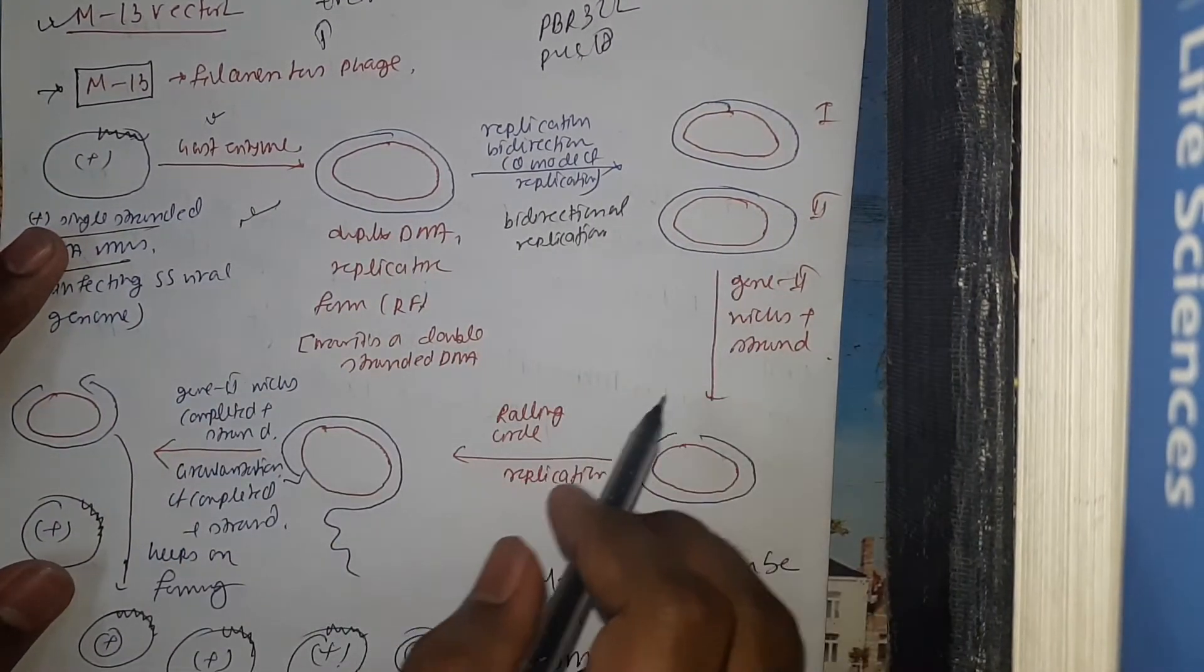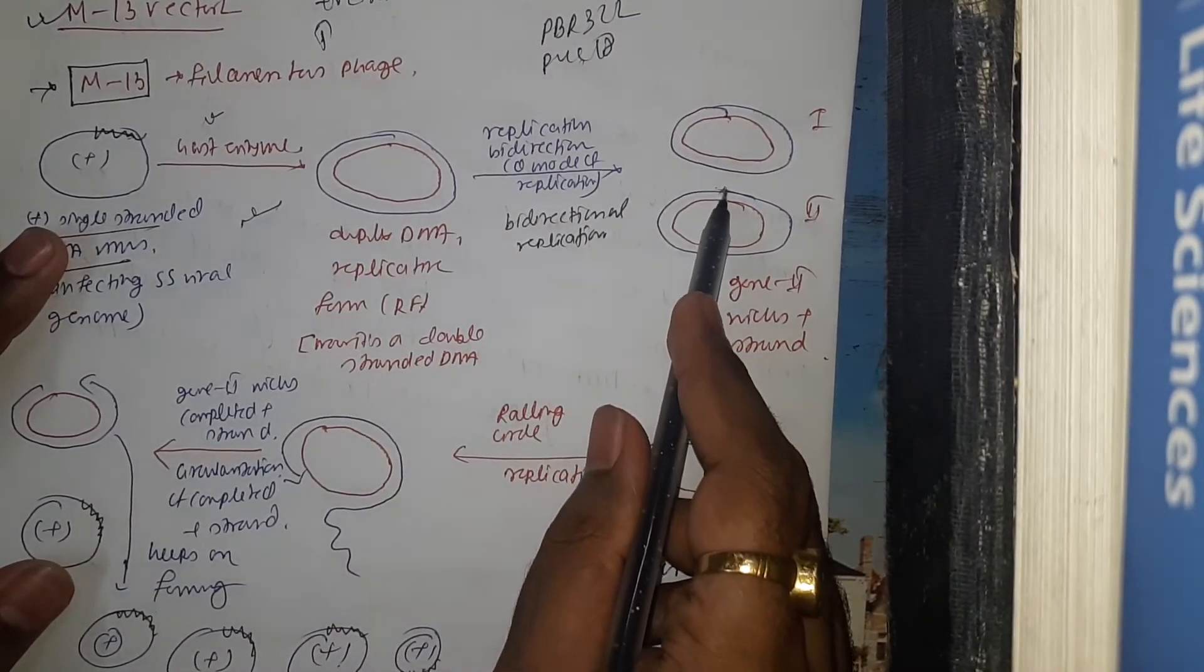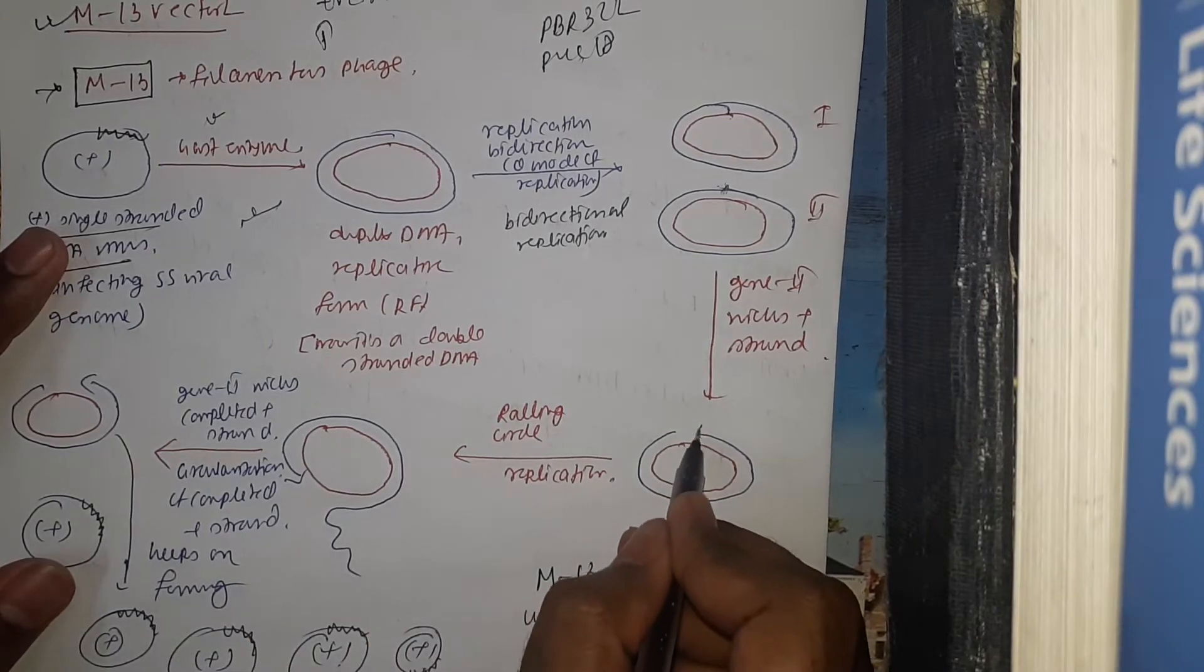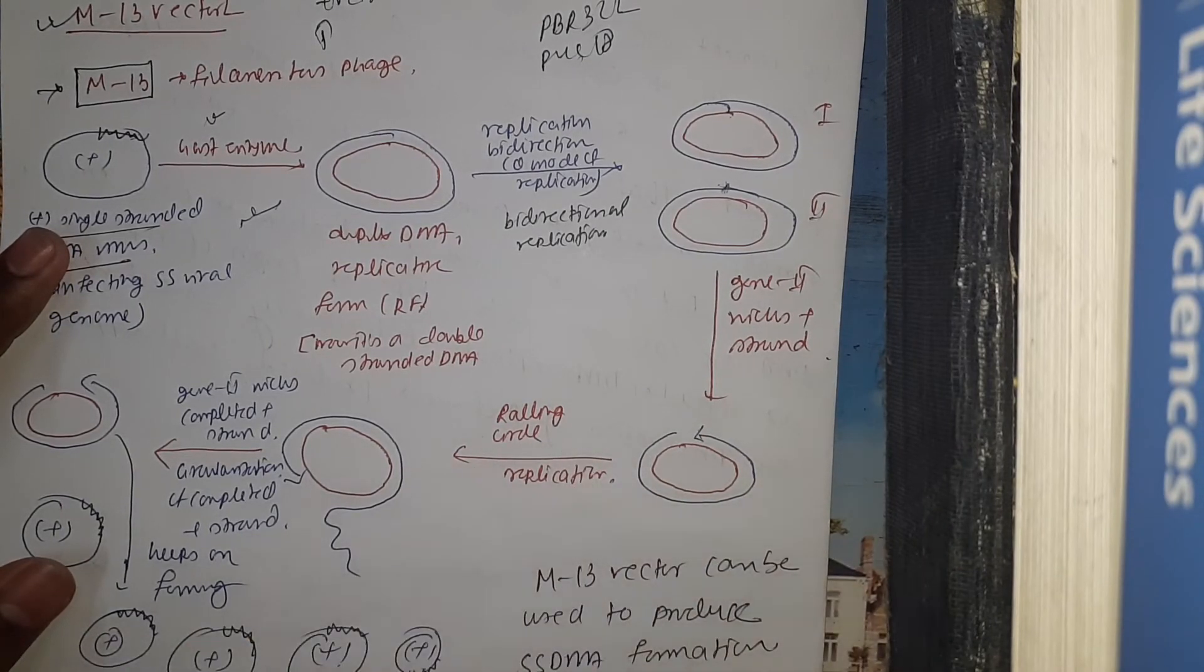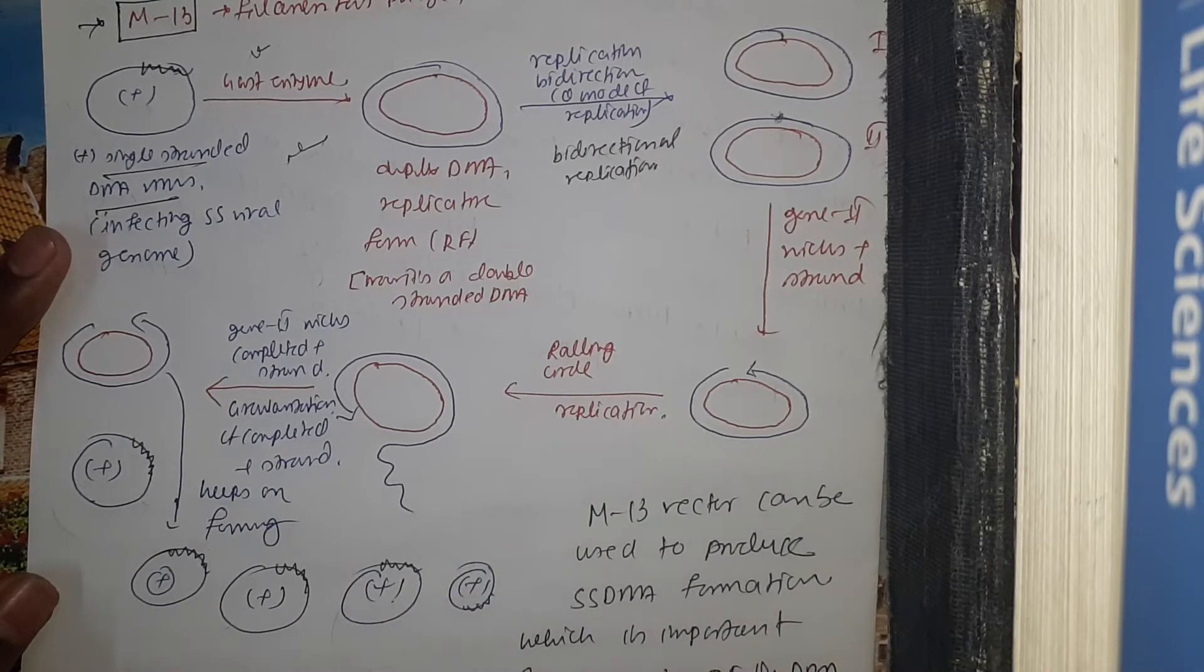One of them makes a nick at the positive sense strand, and from that nick, it will start to do rolling circle replication. Rolling circle replication will ultimately give us multiple positive sense strands of the single-stranded DNA.